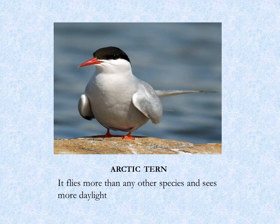This bird that you can see is known as the arctic tern. It is one of the migratory birds. It flies more than any other species and sees more daylight. This arctic bird can reach up to 13 to 15 years of age. They mainly eat fish and small marine. In your textbook, fill in the blank with the spelling: arctic tern.